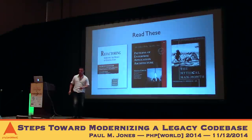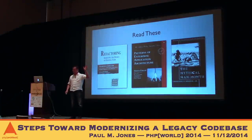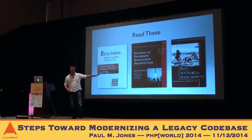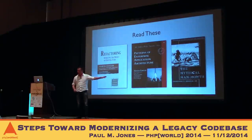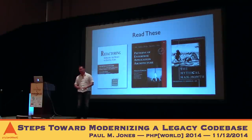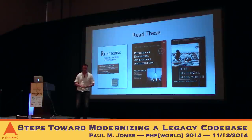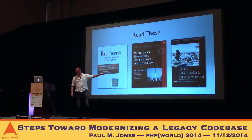The second one is called Patterns of Enterprise Application Architecture, also by Fowler and some other authors. When you read this book, you're going to discover it's telling you how to do things you already know how to do. The great thing about this book is not the things it describes — it's that it gives us a vocabulary to use when talking about those things. Words like active record, table data gateway, model view controller come out of this book. So instead of saying 'I have a class whose only job is to move data in and out of the database and the class only talks to one table,' we can say 'I'm using a table data gateway.' That's the power of the vocabulary provided by this second book.